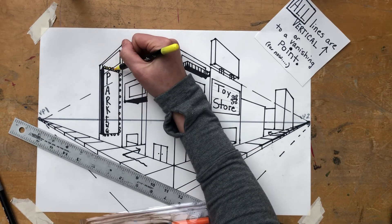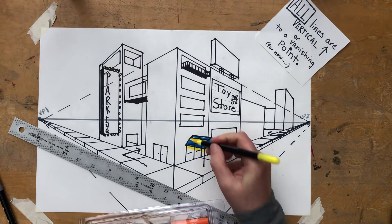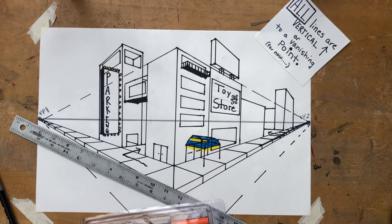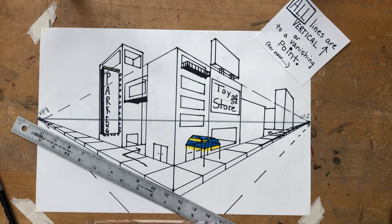I could color in all my light bulbs over here if I wanted to. But that way you can kind of see the awning a little bit better. It's sticking off of the building.